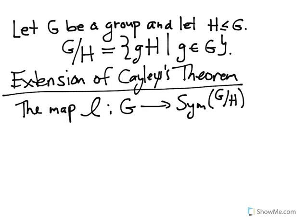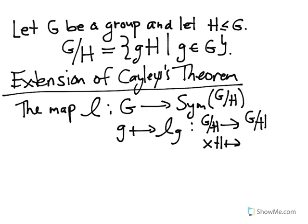The map sends little g, and again to the same map, we'll call it L sub g, but only now it's going to go from G mod H to G mod H. It has to take a coset, call it xH, and send it to another coset. The coset it will send it to is just gxH.